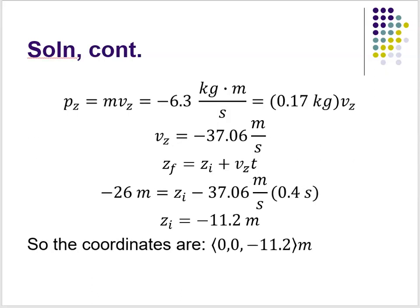Our solution is relatively straightforward. We use the momentum equation PZ = mVZ and solve for the velocity in the Z direction. I don't call it average, initial, or final because it's constant throughout. PZ equals −6.3 kg·m/s as given in the problem, and that equals 0.17 kg times VZ — the mass was 170 grams, converted to 0.17 kilograms. Solving for VZ gives a velocity in the Z direction of −37.06 meters per second.